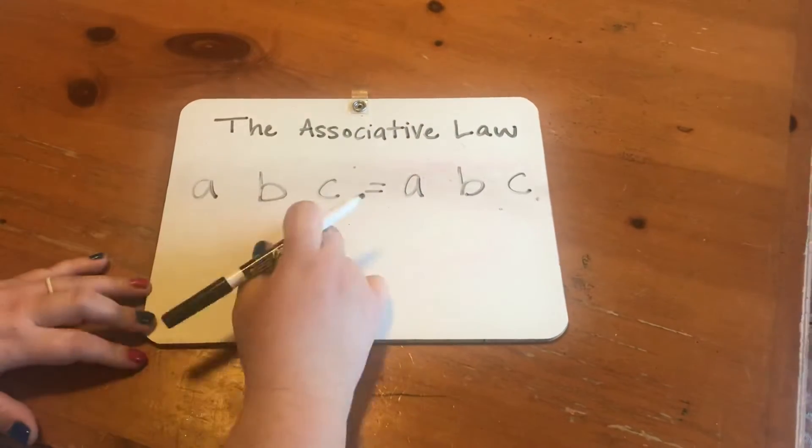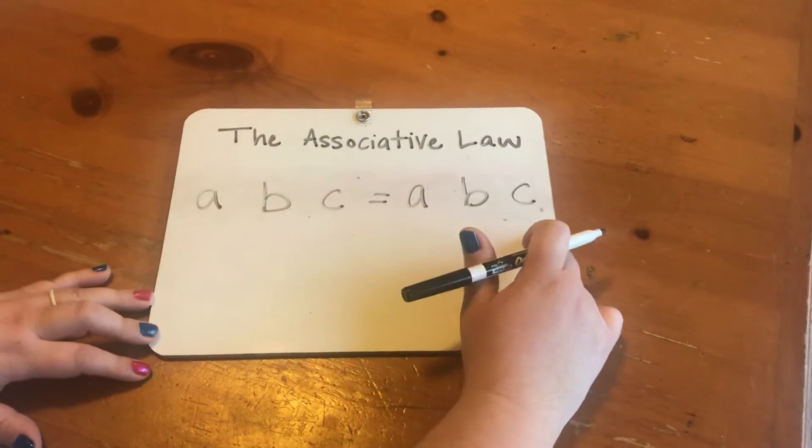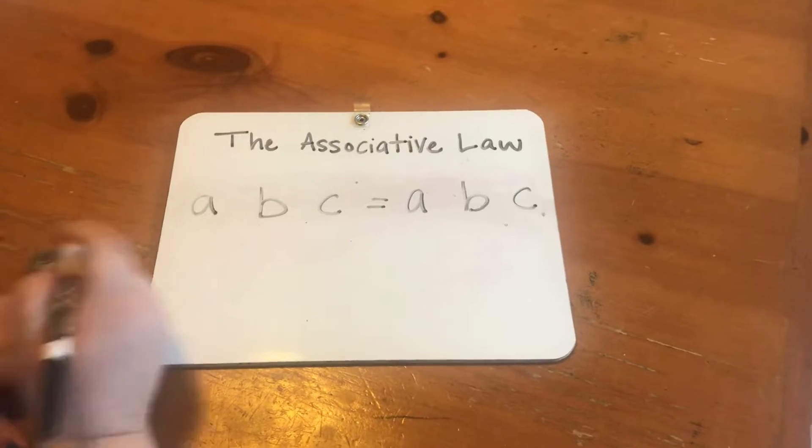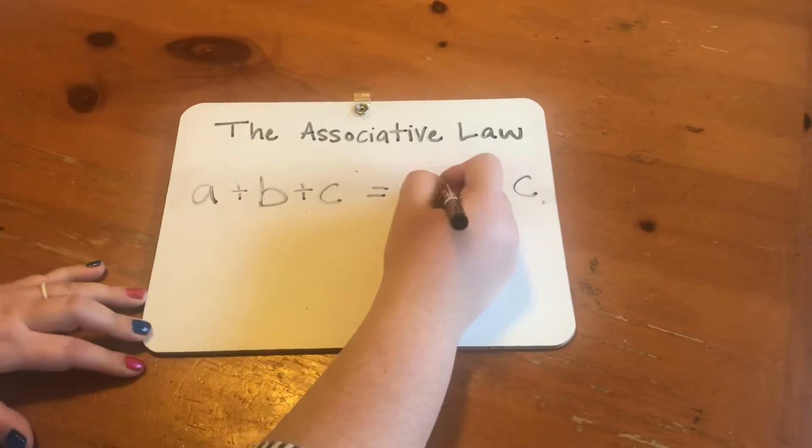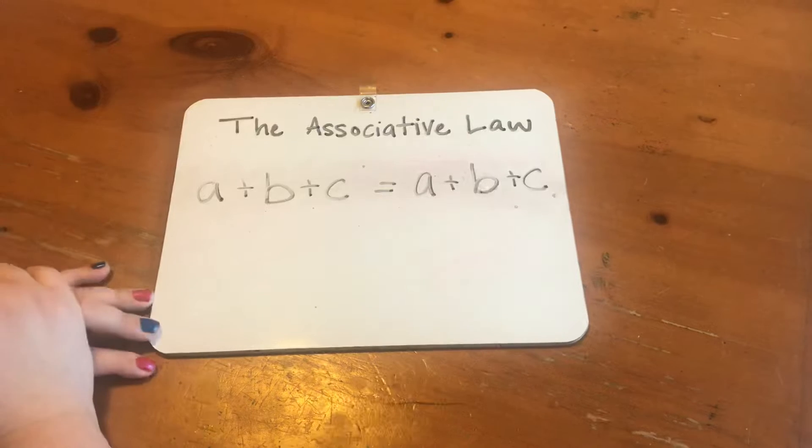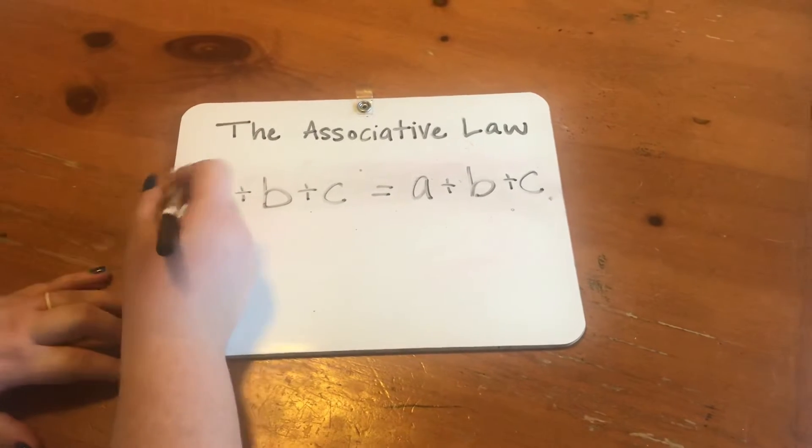Then we write out ABC equals ABC. For addition, we need to add in our plus signs and then we're going to put in our parentheses.